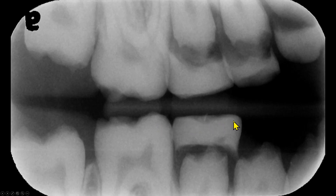The occlusal surfaces of the deciduous molars are flat. The cusps of the unerupted premolars are very pointed.